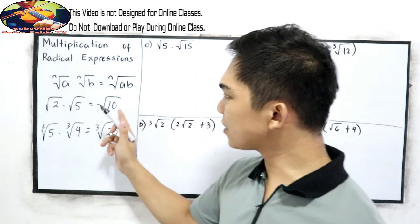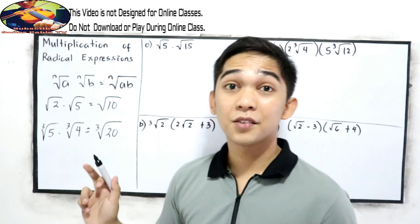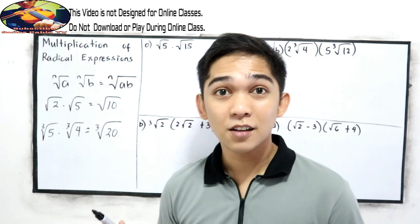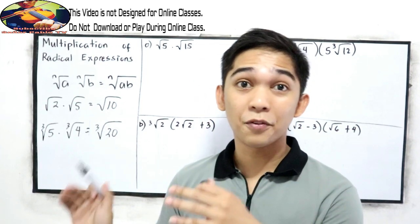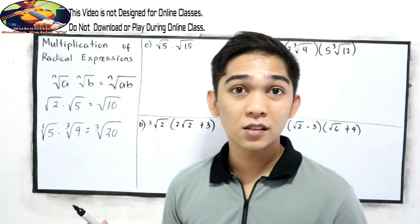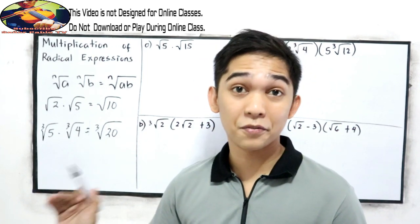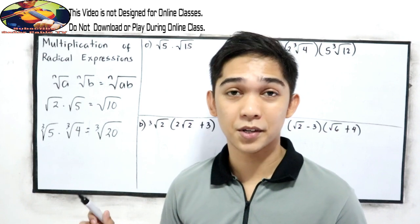Always check the radical for your final answer. If there is a factor that is a perfect square number, we can simplify further.